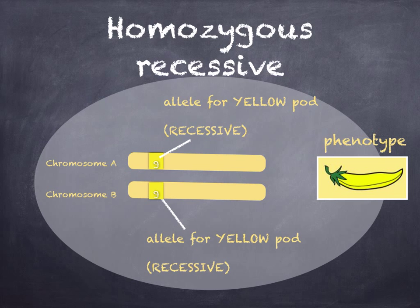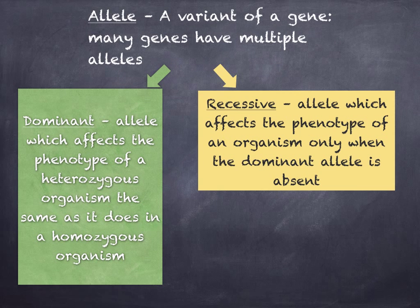If you've got two recessive alleles — both the same — we call that homozygous recessive, and the pod will be yellow. The dominant allele affects the phenotype of a heterozygous organism the same as it does in a homozygous organism: with green-green you get a green pod, and with green-yellow you still get a green pod. The recessive allele affects the phenotype only when the dominant allele is absent: yellow-yellow gives a yellow phenotype, but yellow with green means the yellow characteristic cannot be seen — the phenotype will be green.